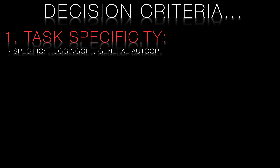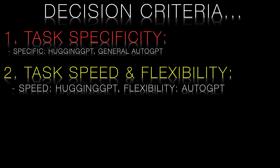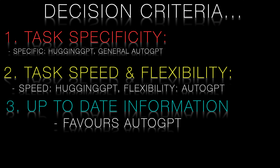Task Specificity: Is your task specialized or more general? Hugging-GPT may perform better for specialized tasks, while Auto-GPT is more adaptable for general issues. Speed and Flexibility: Auto-GPT can be slower due to its reliance on internet searches for few-shot learning, while Hugging-GPT offers faster performance with its expert models. Up-to-date information: Auto-GPT may provide more current information, while Hugging-GPT's expert models might have slightly outdated information.